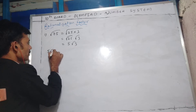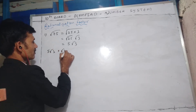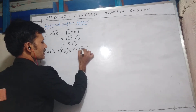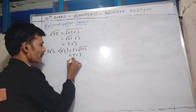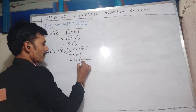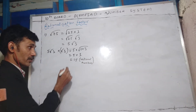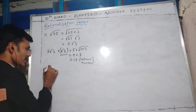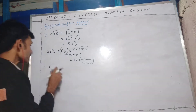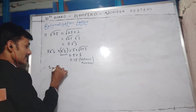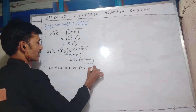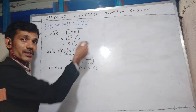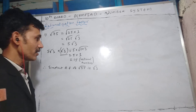Now I can write the rationalizing factor. For 5√3, if you multiply with √3, using laws of radicals, √3 times √3 is 3, and 5 times 3 is 15. So I get a rational number. When you multiply an irrational number with another and you get a rational number, then one is the rationalizing factor of the other. Therefore, the simplest rationalizing factor of √75 is √3. Note that 2√3, 3√3, or even √75 are also rationalizing factors, but we take the simplest one.